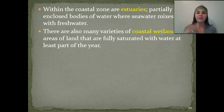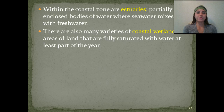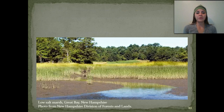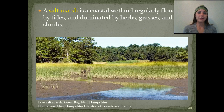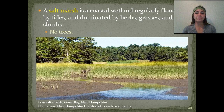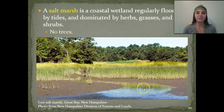Within the coastal zone, we also have estuaries — these are partially enclosed bodies of water where seawater mixes with fresh water. There are also varieties of coastal wetlands, which are areas of land fully saturated with water at least part of the year. These include our salt marshes, seagrass beds, and mangrove forests. A salt marsh is a coastal wetland that is regularly flooded by tides and is dominated by herbs, grasses, and shrubs. You don't really see a lot of trees in a salt marsh.